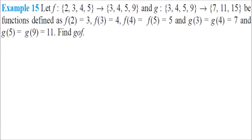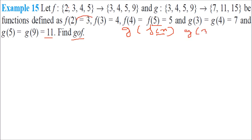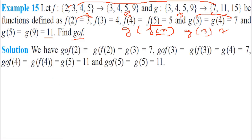Example: f = {(2,3),(3,4),(4,5),(5,9)} from set A to set B, and g = {(3,7),(4,8),(5,9),(9,11)}. Find gof. gof(2) = g(f(2)) = g(3) = 7. So 2 is related directly to 7 through the composition. This is the meaning of gof — relating A directly to C through B.